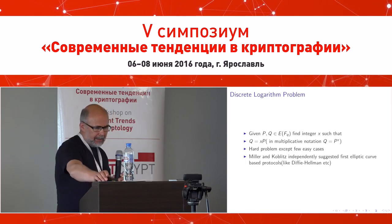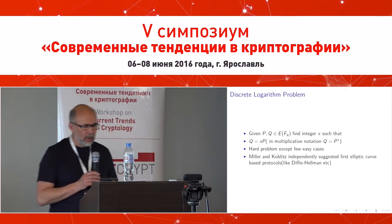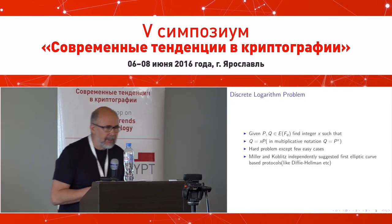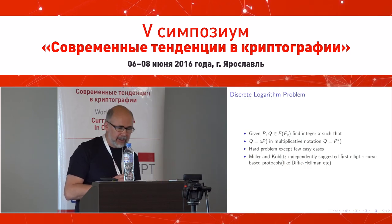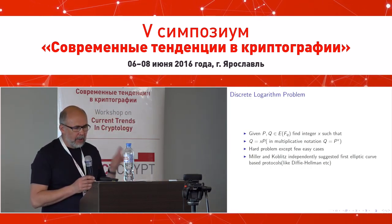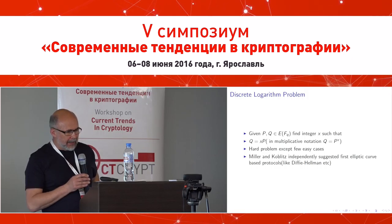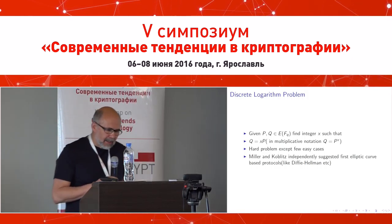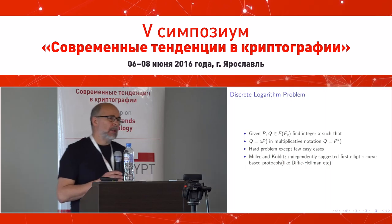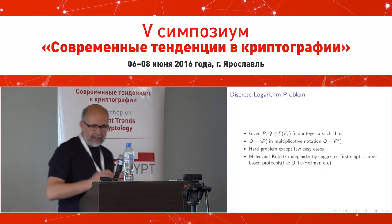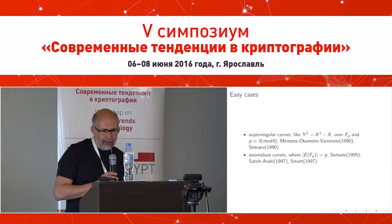The discrete logarithm problem is defined as follows: given two points P and Q from the elliptic curve group, find the integer x such that Q = xP. This is additive notation; in multiplicative notation we write Q = P^x. It is the same problem. In elliptic curves we use additive notation. This is a hard problem except for a few easy cases. Miller and Koblitz independently suggested the first elliptic curve cryptography protocols, like Diffie-Hellman.